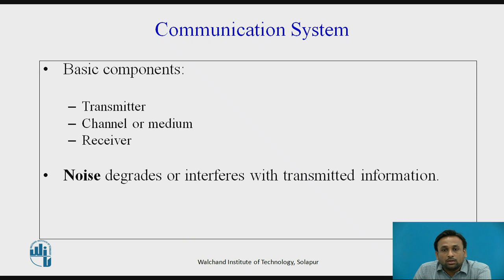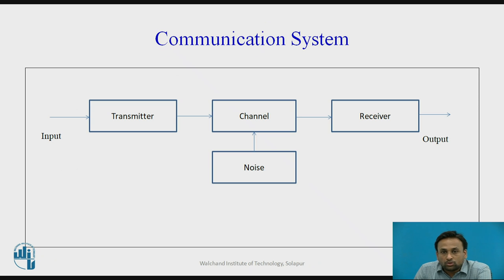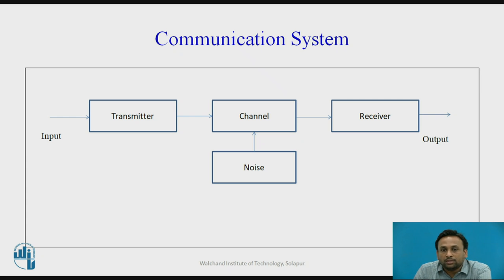We will see the communication system. The basic components are transmitter, channel or medium, and the receiver. This is the block diagram of the communication system. It consists of transmitter, channel, and receiver. The transmitter consists of transducers, amplifiers, encoder, decoder, and circuits.